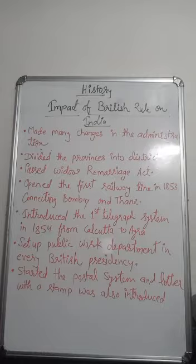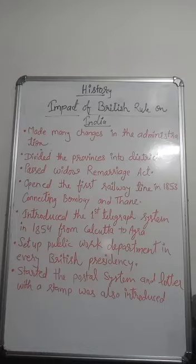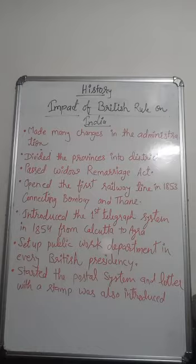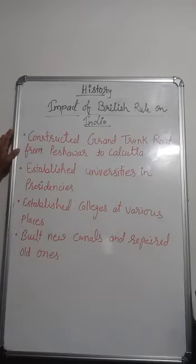The British made many changes in the administration. They divided the province into districts. They passed the Widow Remarriage Act, opened the first railway line in 1853 connecting Bombay and Thane, introduced the first telegraph system in 1854 from Calcutta to Agra, and set up a public works department in every British presidency. They also started the postal system, and stamps were later introduced. The Grand Trunk Road was constructed from Peshawar to Calcutta.